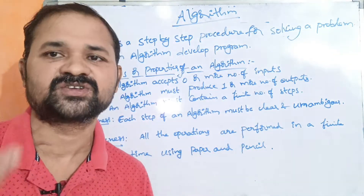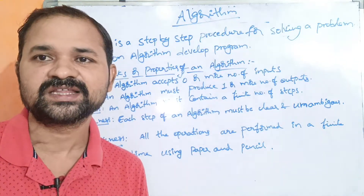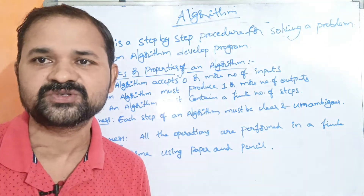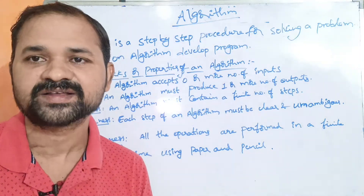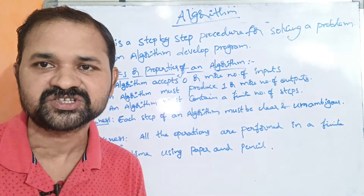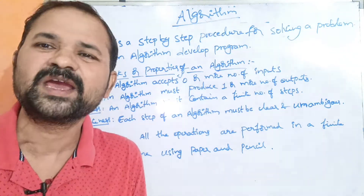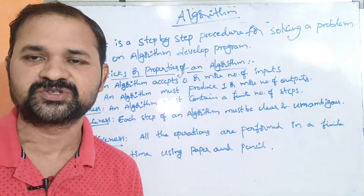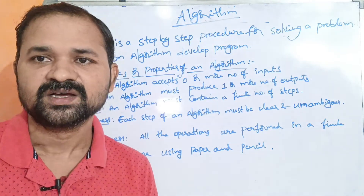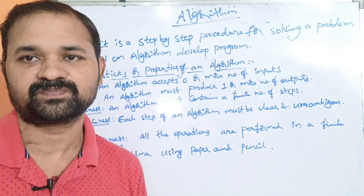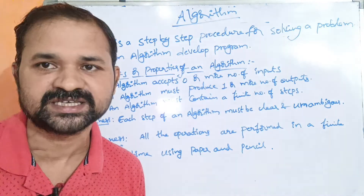What is the problem? Examples include the addition of two numbers, banking software, train reservation, bus reservation, and the sum of digits of a given number. These are examples of problems. First, let us solve the algorithm. An algorithm is a step-by-step procedure.